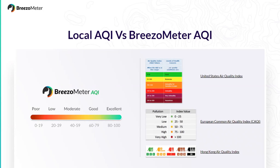That's the reason we decided at Breezometer to make a global air quality index. You can look at our heat map right now and see the air quality at your location and compare it to another place — New Zealand compared to Germany, or China compared to whatever you like. Our index goes from 0 to 100, with 0 being poor and 100 being excellent, where the logic is like a percentage — if I got 100% in my exam, that's good air quality.